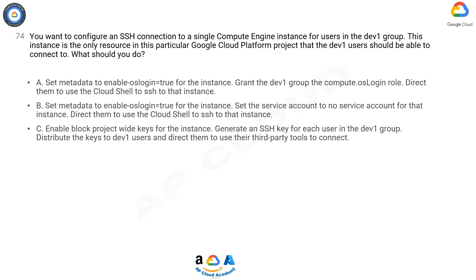C. Enable block project-wide keys for the instance. Generate an SSH key for each user in the Dev1 group. Distribute the keys to Dev1 users and direct them to use their third-party tools to connect.